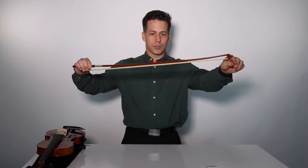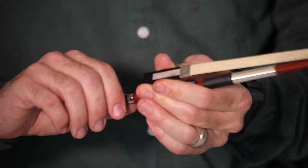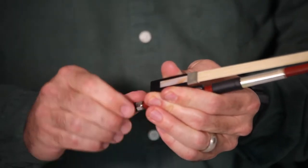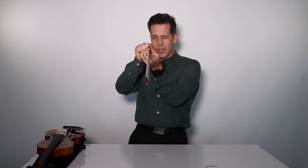Right now it's loose. You can see how the horse hair moves because it's so loose. As I tighten it, it will tighten up and you'll see the bow shape change a little bit. It starts to straighten out.